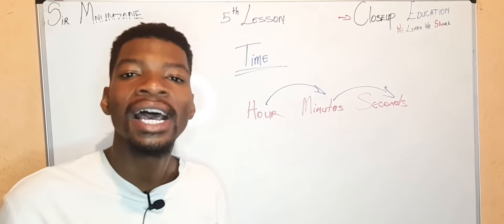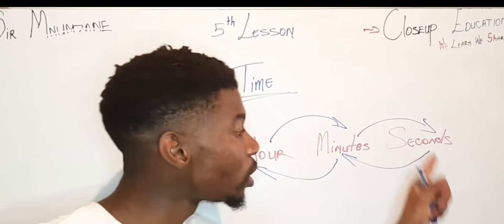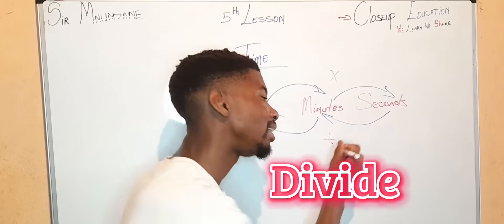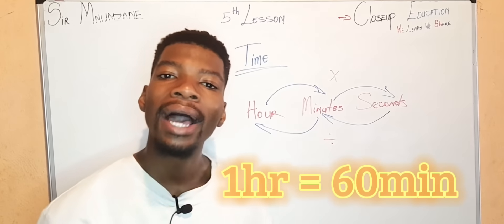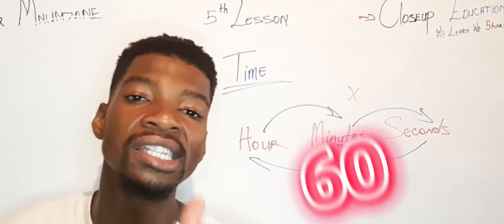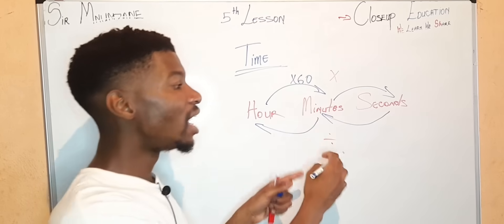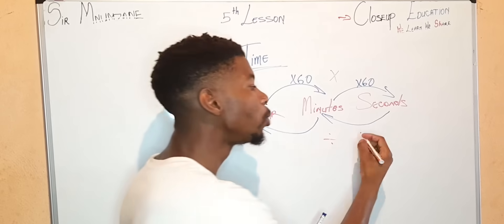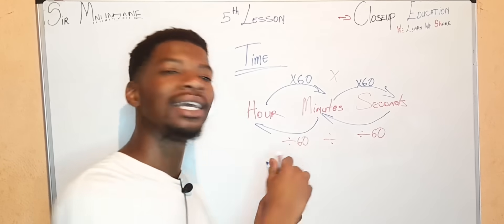How do you convert from hour to minute and from minute to seconds, and vice versa? From the bigger value — which is an hour — to a smaller value — which is a second — you have to multiply. From a smaller value to a bigger value, you divide. We use 60 to convert time. From hour to minute we multiply by 60, from minute to second we multiply by 60, and vice versa we divide by 60.